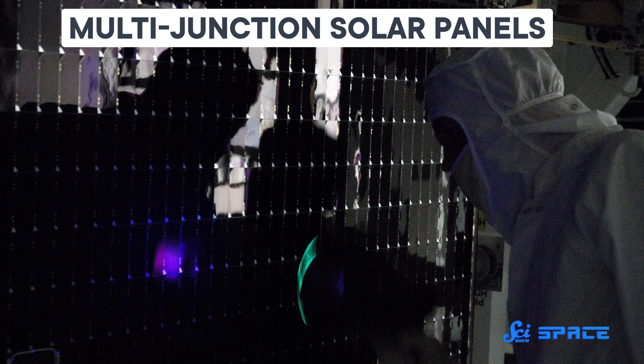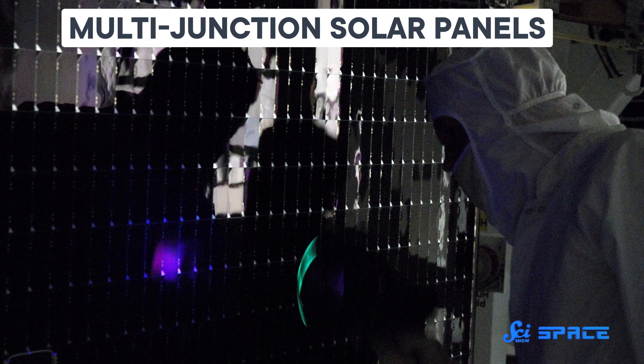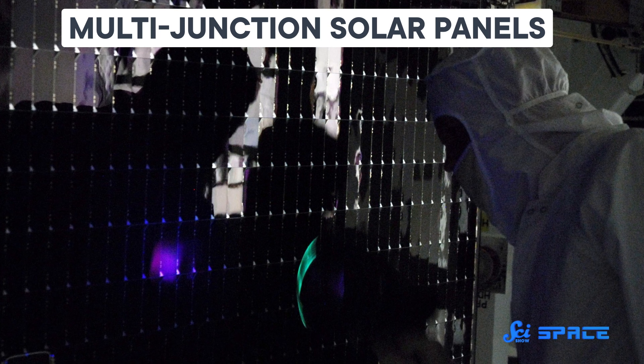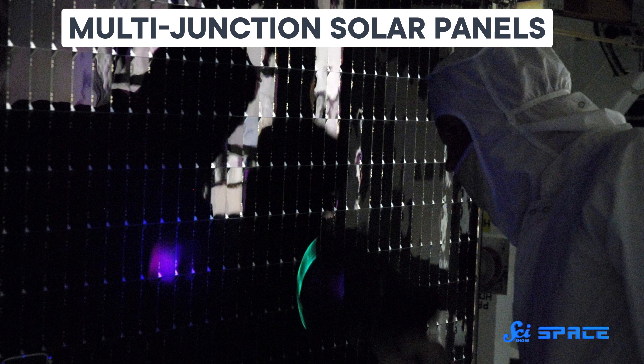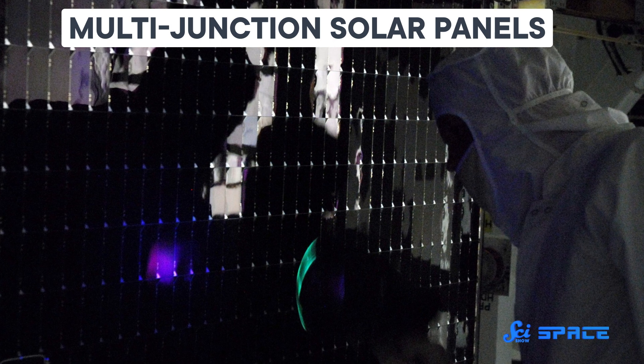Because the spacecraft also sported brand new so-called multi-junction solar panels. Made of different materials layered together, they were able to absorb more of the sun's wavelengths than traditional silicon photovoltaic cells. In fact, they could theoretically produce the same wattage with just one-eighth as much surface area. But to get the most out of them, these revolutionary new cells needed to have a high intensity of light falling onto them.